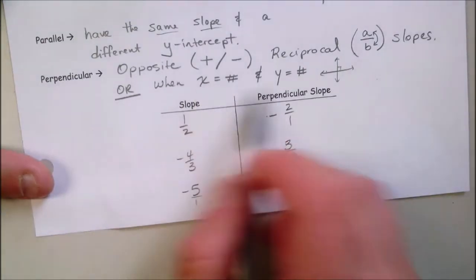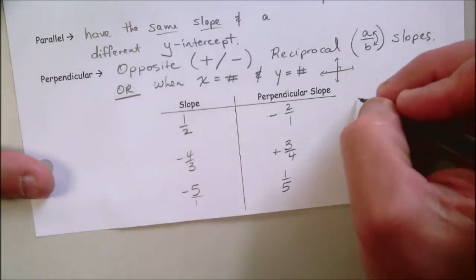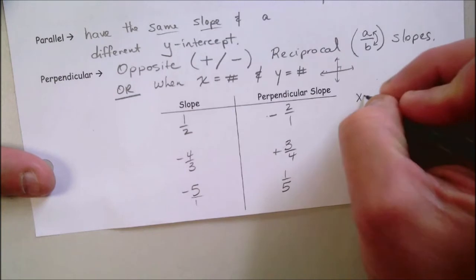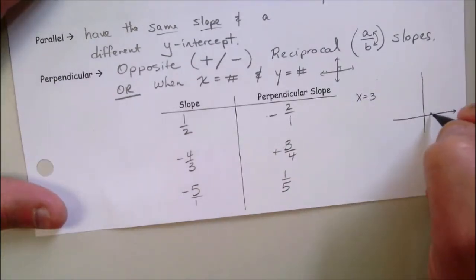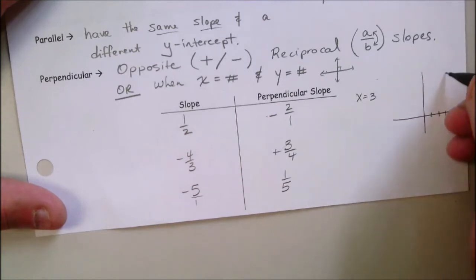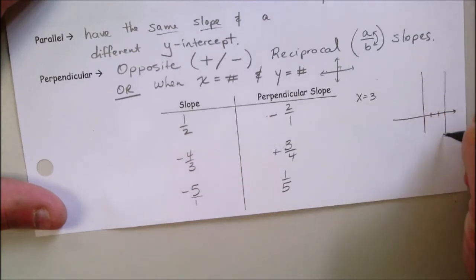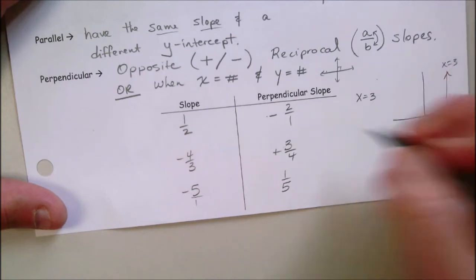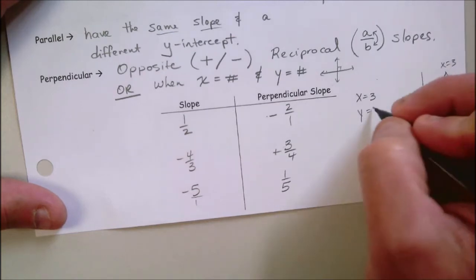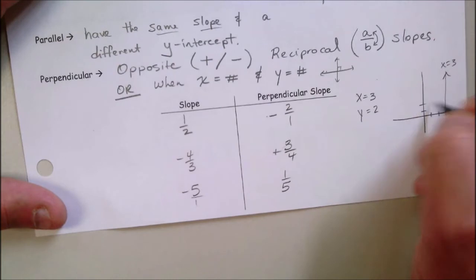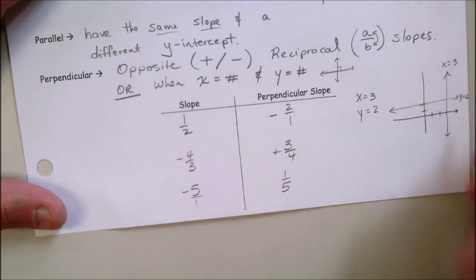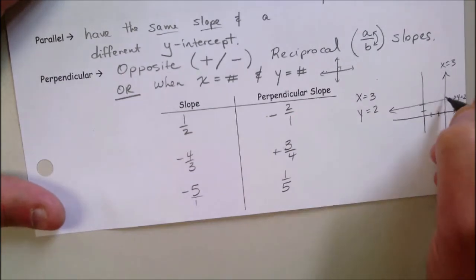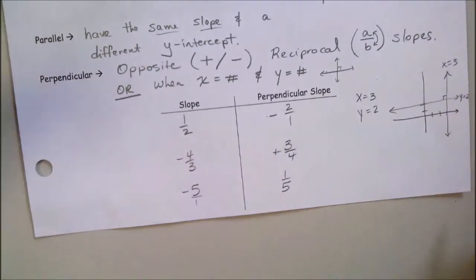Going back to the idea of x equals a number and y equals a number: when x equals a number it's a vertical line; when y equals a number it's a horizontal line. For example, x equals 3 is a vertical line at 3, and y equals 2 is a horizontal line. When they intersect, you can see that's a right angle — so vertical and horizontal lines are always perpendicular.